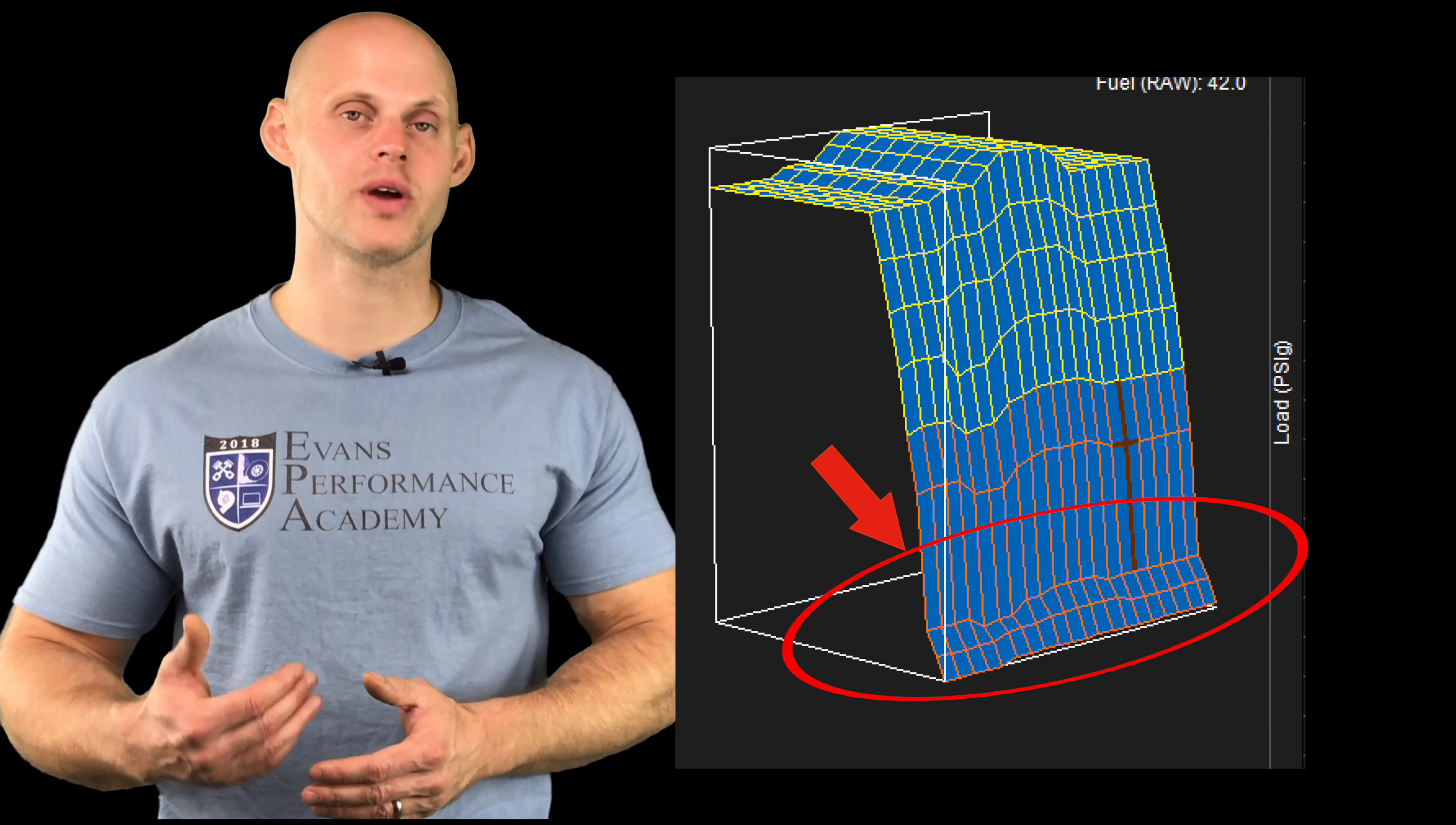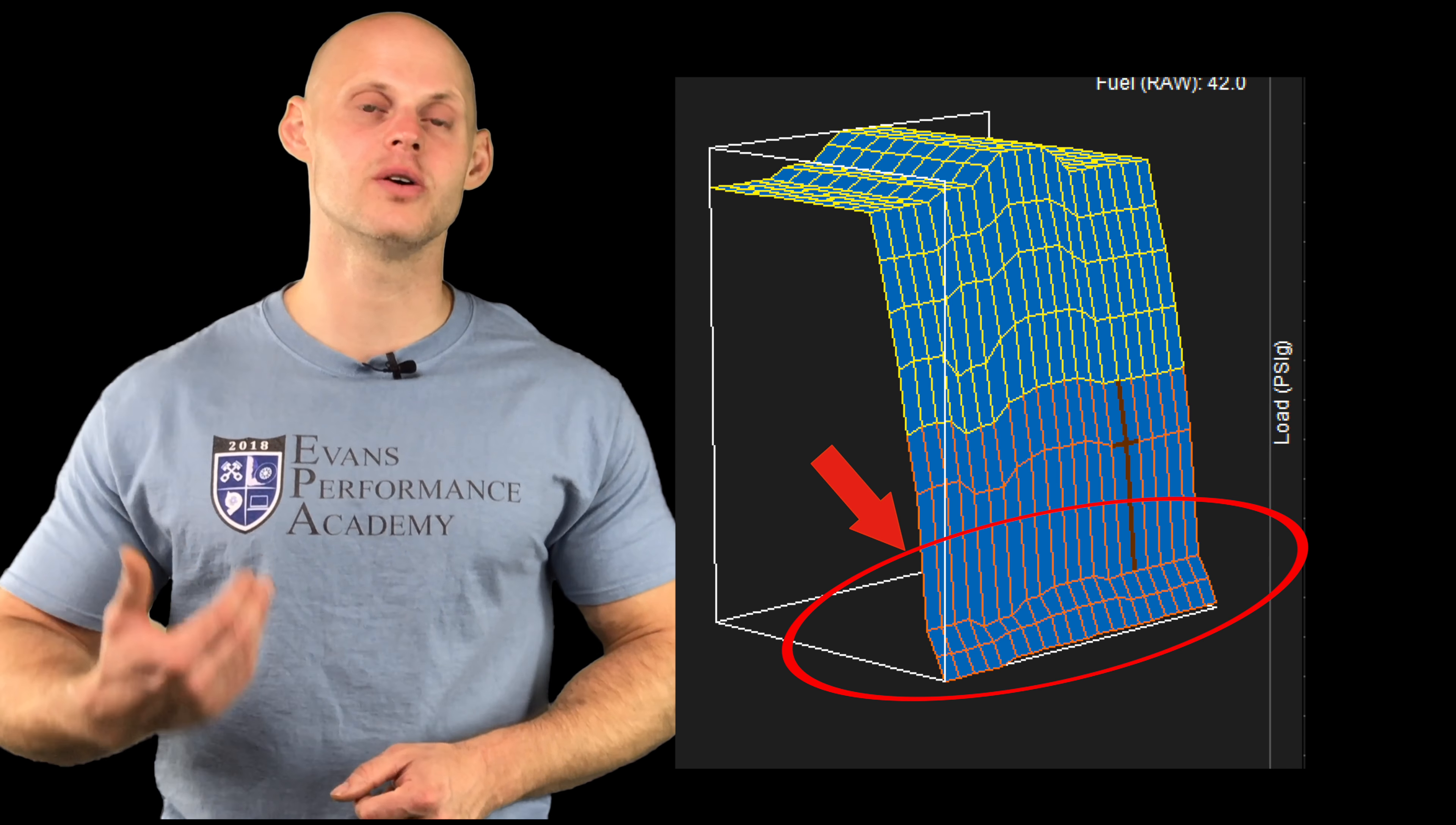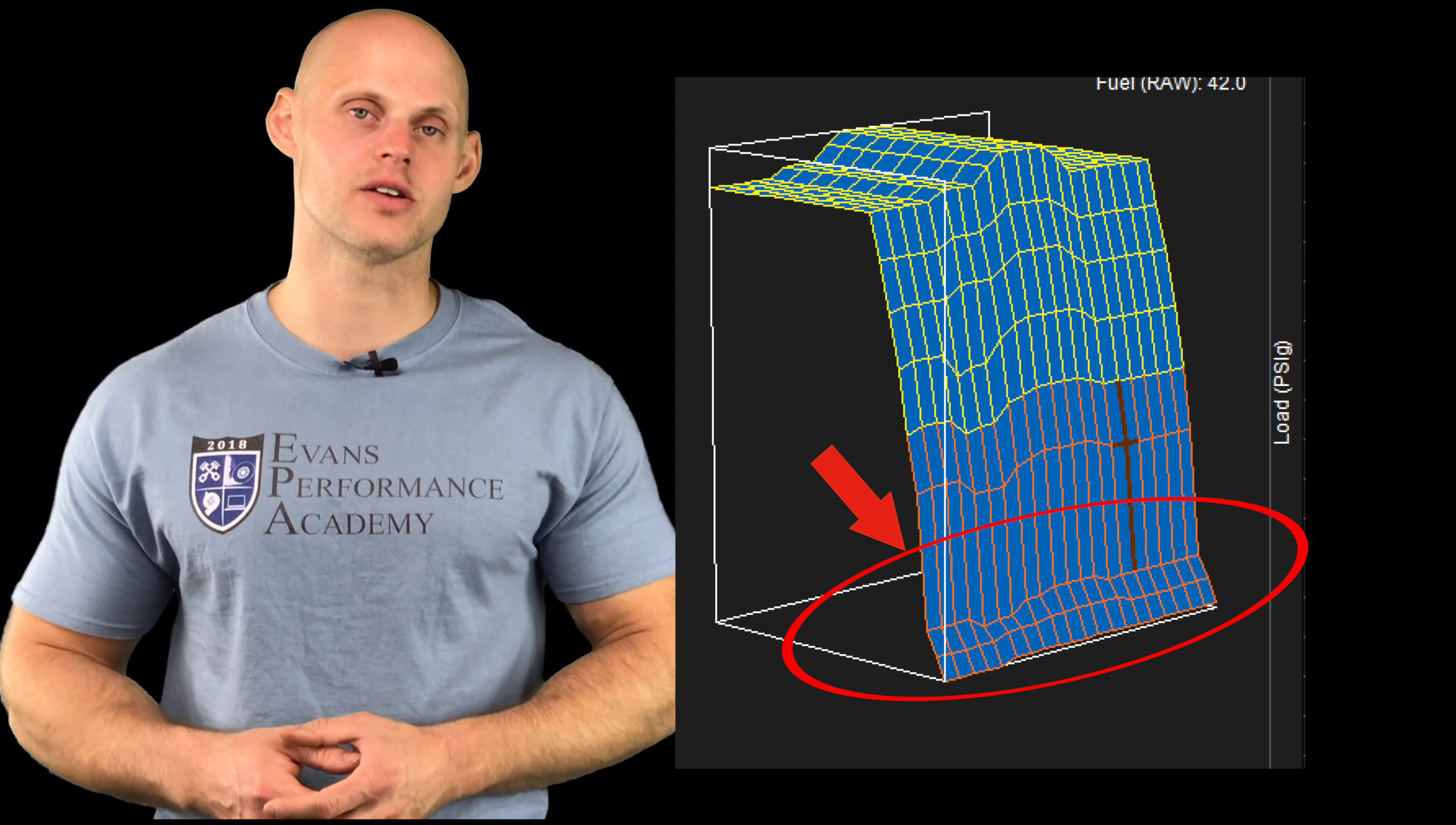Likewise, if we have the dead time values too high and we have everything turned down a ton, it doesn't flow again with that three-dimensional look at the table, it's going to be a dead giveaway that we don't have our injector data right.